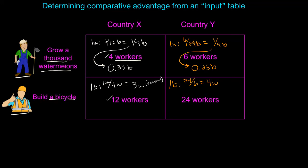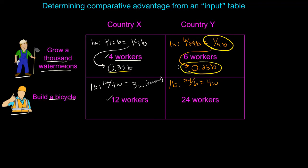We now have our opportunity costs of bicycles and watermelons in these two countries. We need to determine who has the lower opportunity cost for watermelons and who has the lower opportunity cost for bicycles, to determine who should specialize based on the principle of comparative advantage. A single watermelon costs less of a bicycle in Country Y than in Country X — only 0.25 bicycles are given up compared to 0.33 in Country X. That gives Country Y a comparative advantage in watermelon production. Country X therefore has a comparative advantage in bicycle production, giving up only three thousand watermelons per bicycle compared to Country Y's four thousand.